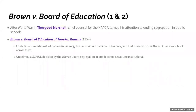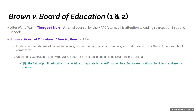Just like a presidential mandate, when the Supreme Court issues a unanimous decision — nine to zero — that is a very powerful statement. They said it this way in their decision: 'In the field of public education, the doctrine of separate but equal has no place. Separate educational facilities are inherently unequal.' You cannot separate children based on the color of their skin in public schools.